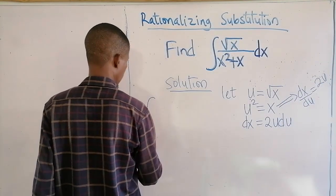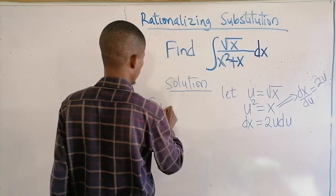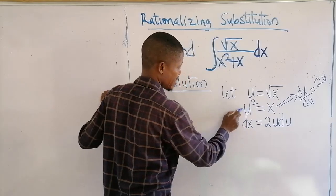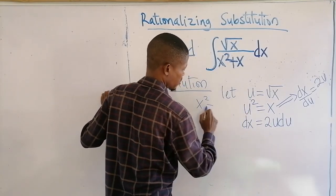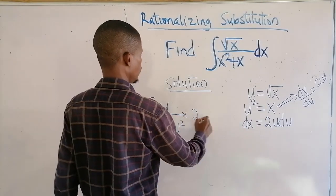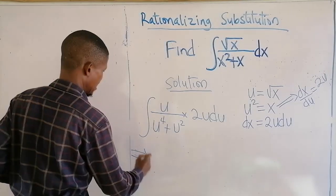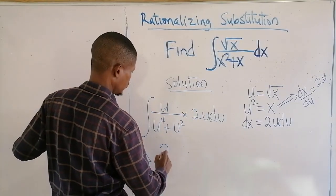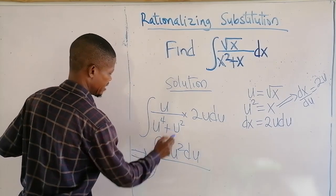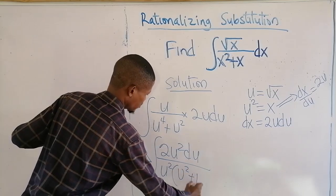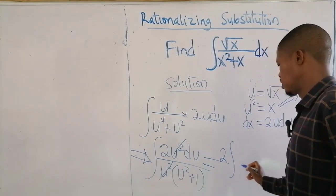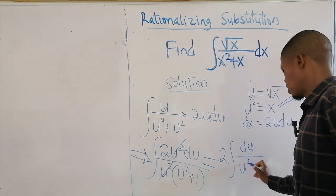Our question now becomes: we have u in the numerator. x squared becomes u to the power of 4 since x equals u squared. So the integral is u over (u to the 4 plus u squared) times 2u du. This gives 2u squared du over u squared times (u squared plus 1). The u squared terms cancel, leaving 2 times the integral of 1 over (u squared plus 1) du.